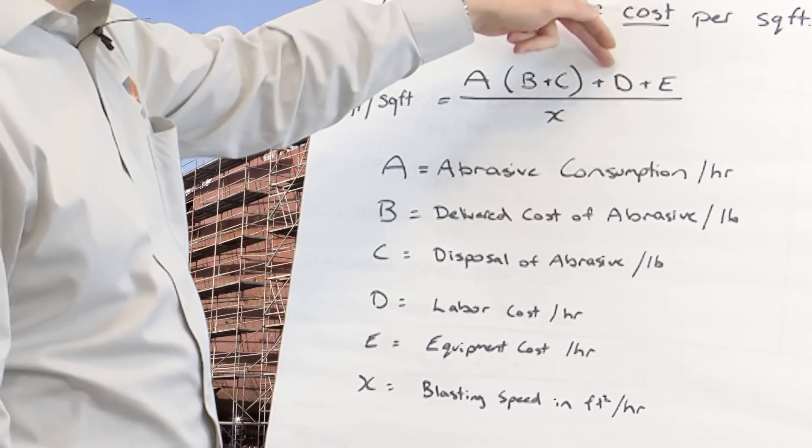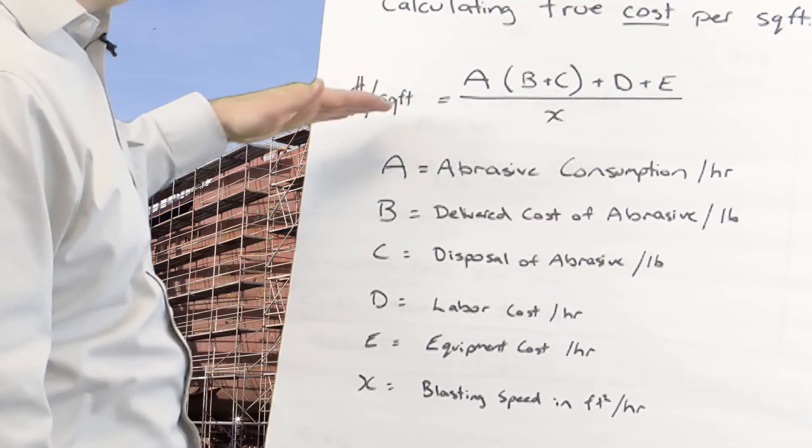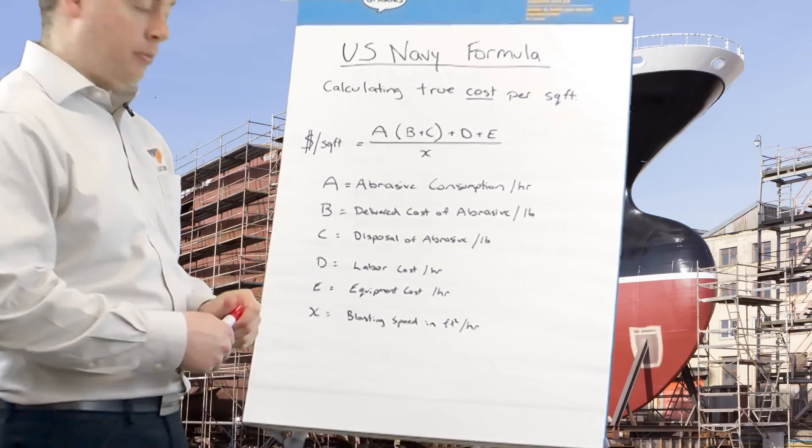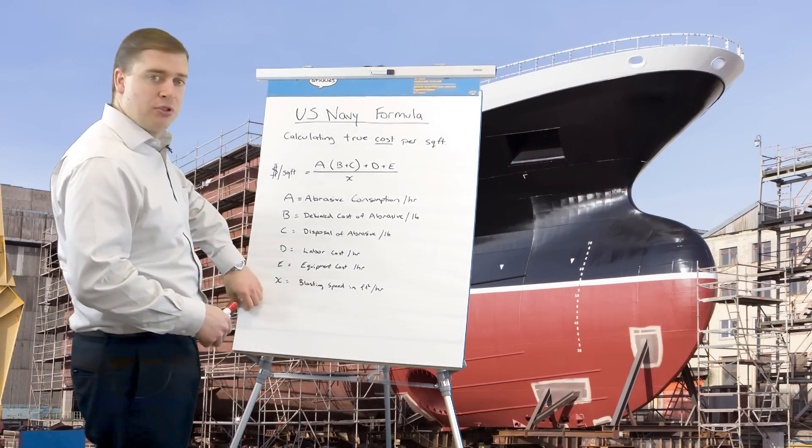D we add our labour cost per hour and our equipment cost per hour and we divide that by how many square feet cleaning we can get done per hour. So I'm going to jump straight into the formula.